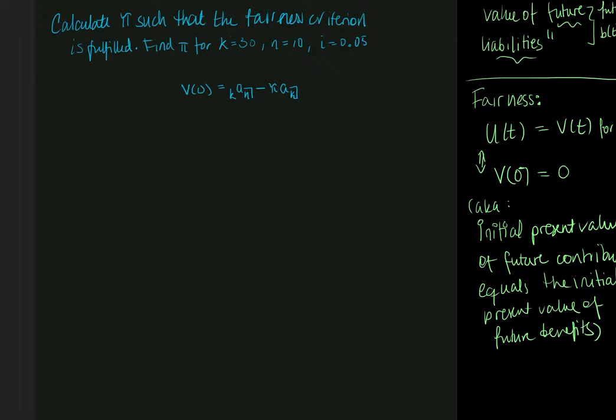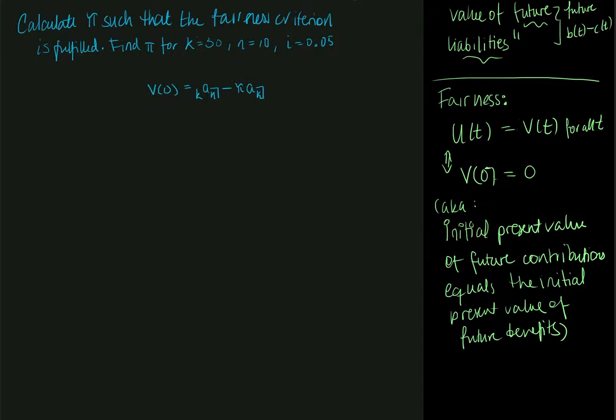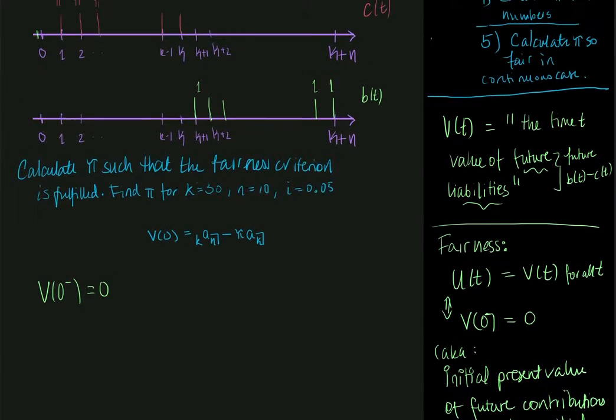Now we can actually show that this holds if and only if v(0) from the left is equal to 0. And this is a criteria that you're allowed to use in order to show fairness. So we will be using this always.